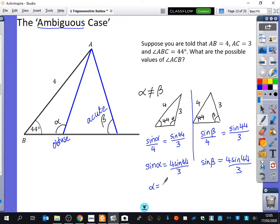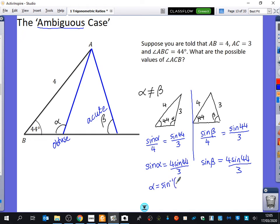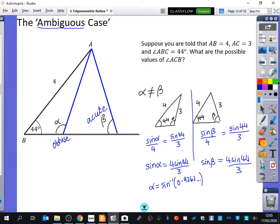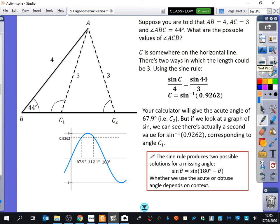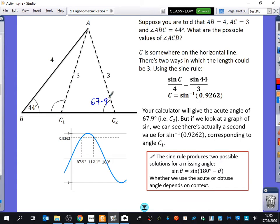So here we would have said that alpha was the inverse sine of this thing and 4 sine 44 over 3 is indeed 0.9262. Your calculator will give the acute angle of 67.9 degrees. So it's actually going to tell us this one over here. The calculator gives you the acute angle.